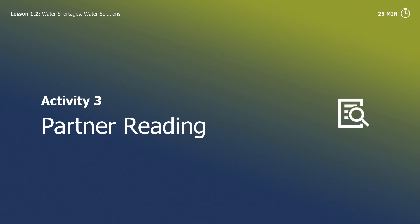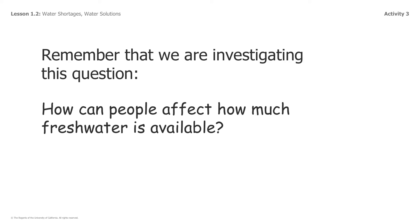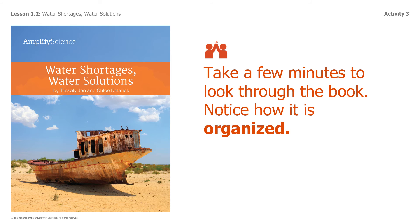Ideally we would be doing partner reading here, and I do encourage you — if you have a friend to FaceTime or some way of reaching out to someone in our class, or maybe even in another class — you guys could do this together. It'd be really fun to read together. Remember, you're going to be investigating this question: how can people affect how much fresh water is available? This is the book you're going to read — it's uploaded into the assignment. Let's look through it and get ourselves oriented. We preview the text and we always know that when we preview, we orient ourselves and we're going to understand it 70% better. It's scientifically proven.